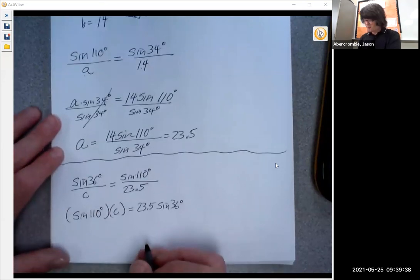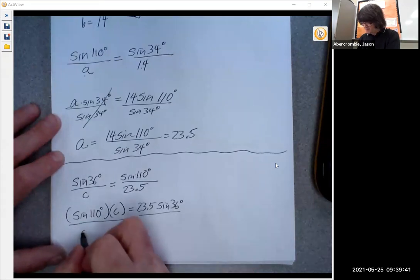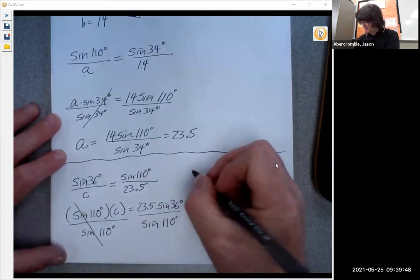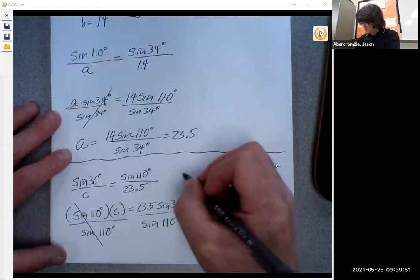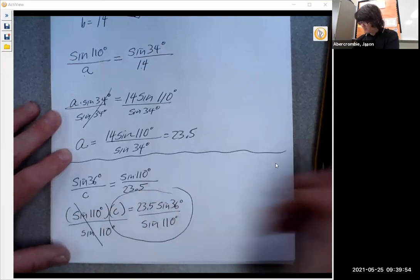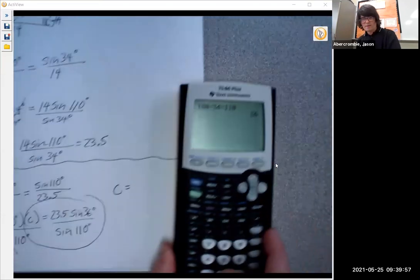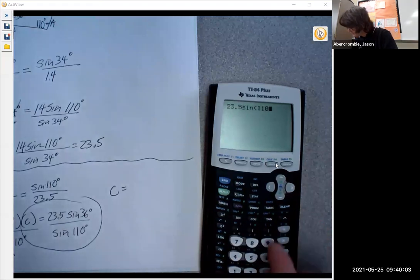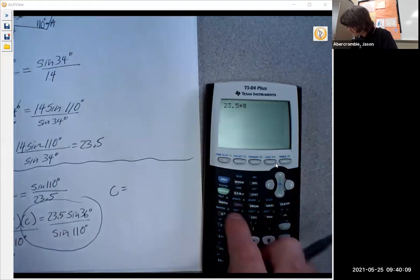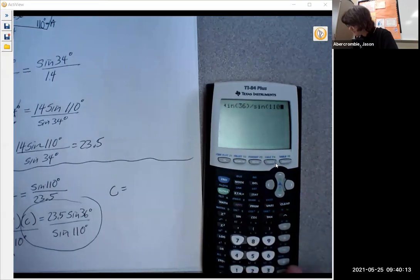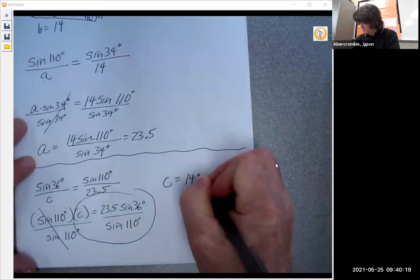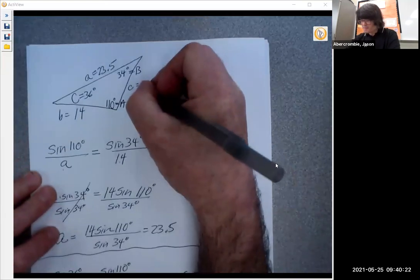We can divide both sides by sine of 110 and you get c equals this big number. So let's figure out what that is. c is going to be 23.5 times sine of 36, then divided by sine of 110, so 14.7. This is going to be 14.7.